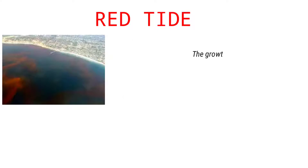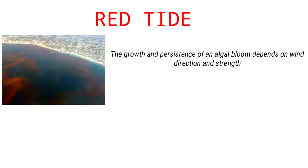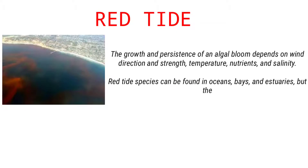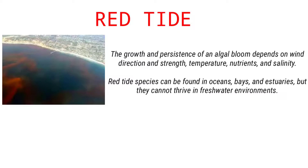The growth and persistence of an algal bloom depends on wind direction and strength, temperature, nutrients, and salinity. Red tide species can be found in oceans, bays, and estuaries, but they cannot thrive in freshwater environments.